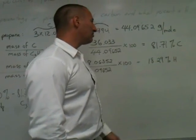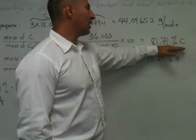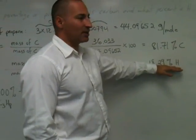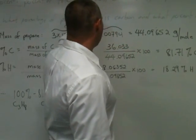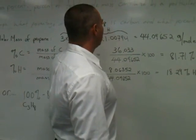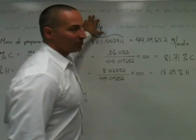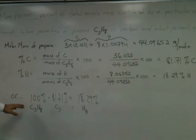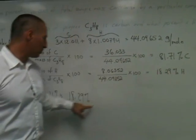We get 18.29%. Alternatively, we could find just one of these quantities and subtract it from 100% because the rest of the molecule is made up of the other component. If you find how much carbon you have, you can easily find what the mass of the remaining component hydrogen is simply by subtraction, and that's what we did here. You should get the same answer, 18.29%, in both cases.